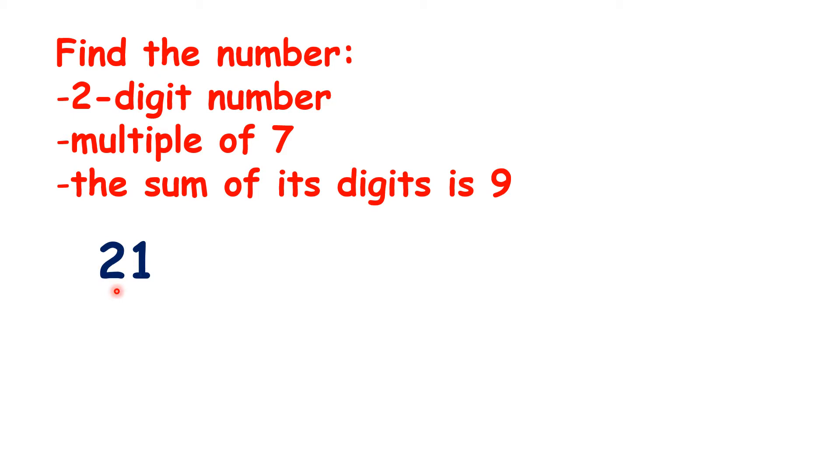It's not 21, because two plus one is three. With 28, two plus eight is 10, not nine. With 35, the digits total eight. With 42, the digits total six.